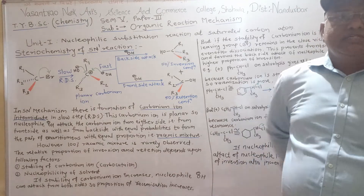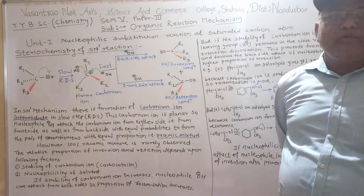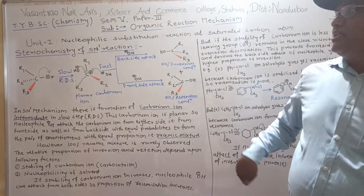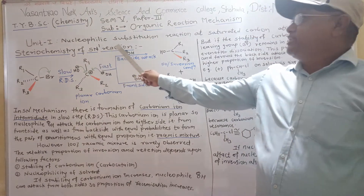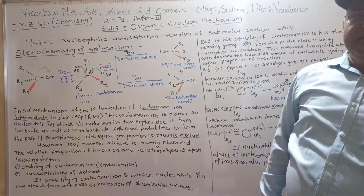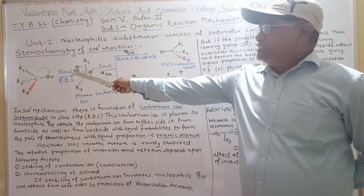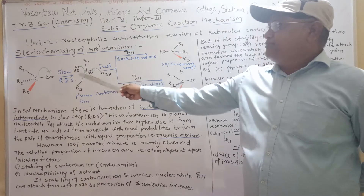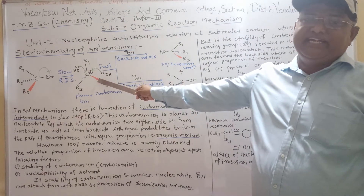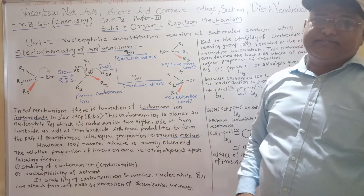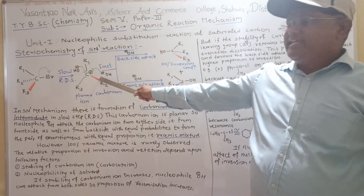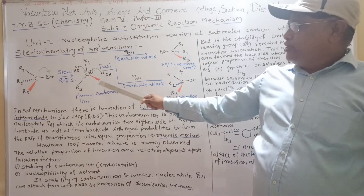Dear students, today we are going to learn stereochemistry of SN1 reaction. In SN1 reaction, in the slow step, a carbonium ion is formed as an intermediate. This carbonium ion is planar.